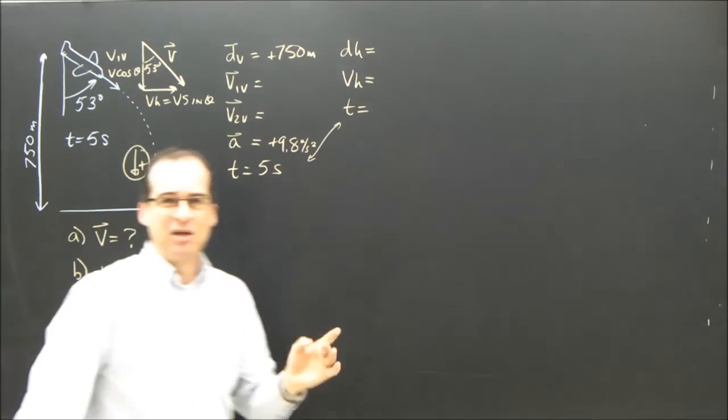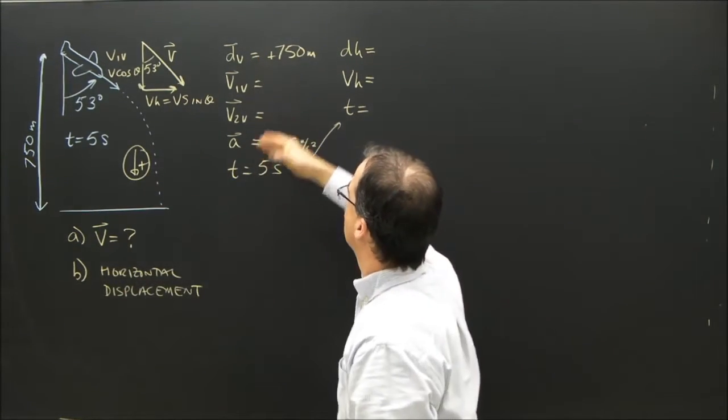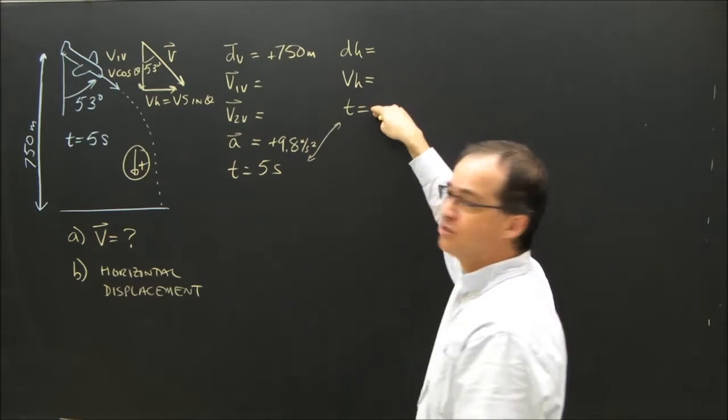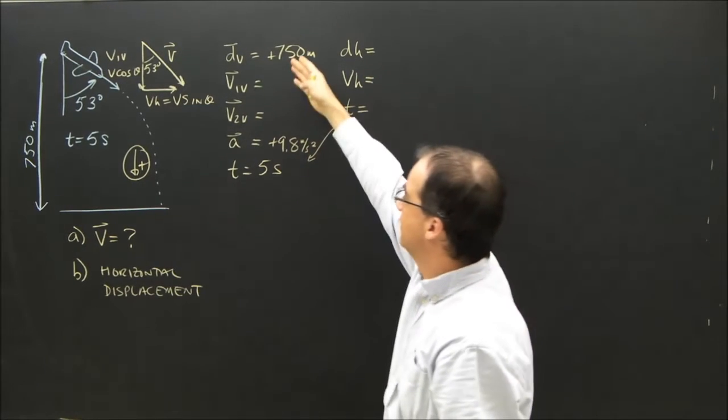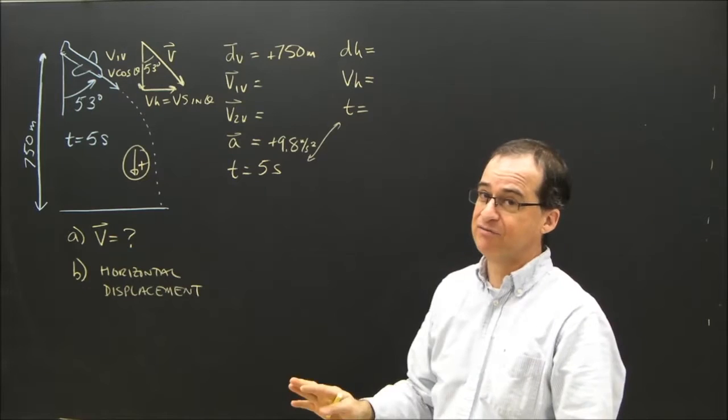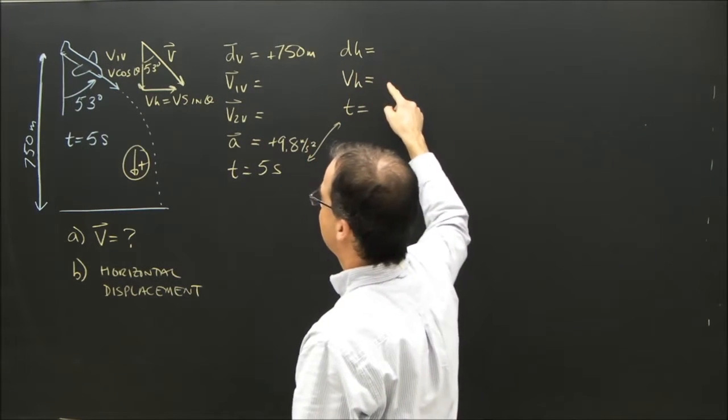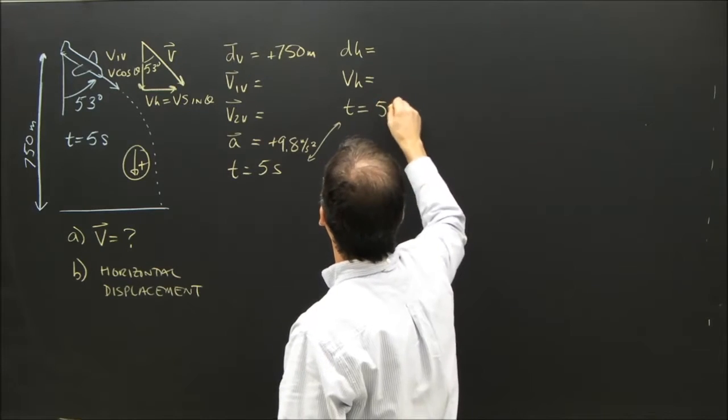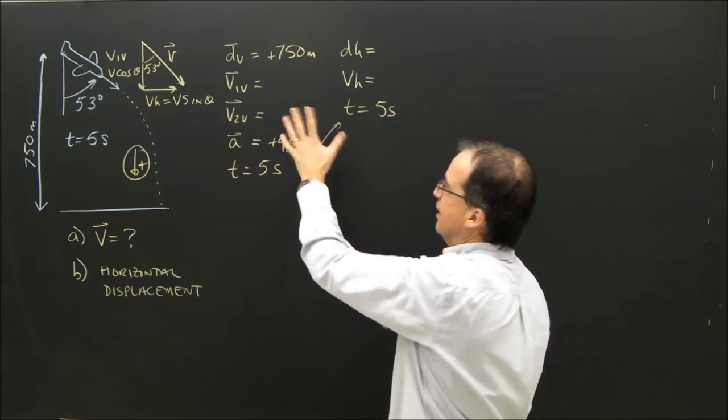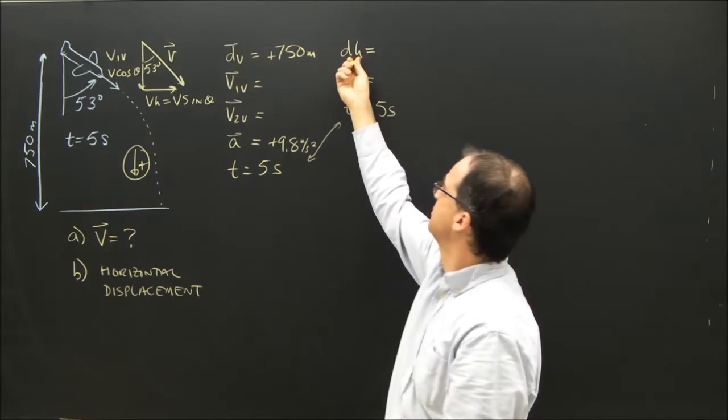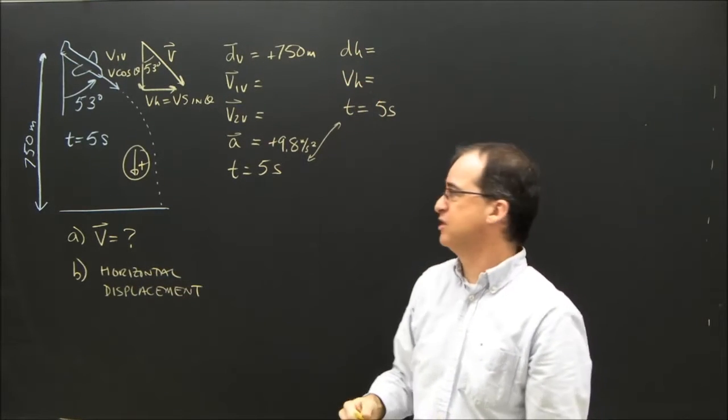Well, that's good news, because in the vertical column, I need three things to be able to solve for anything. In the horizontal column, I need two things to be able to solve for anything. I already can see in the vertical, I've got three things. I can find just about anything. In the horizontal, what do I have? I have actually, I've got the time, because that is in both columns, and nothing else. Question B is find the horizontal displacement.